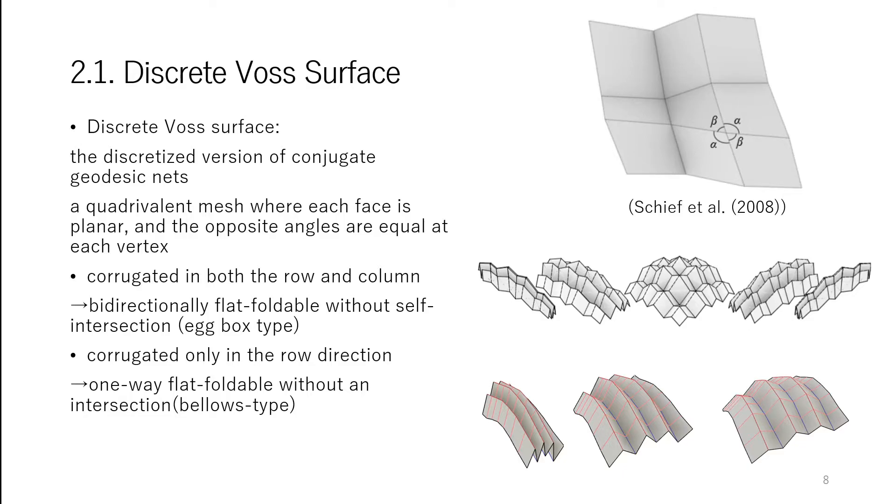When the surface is corrugated in both the row and column directions, we obtain the generalization of egg-box surfaces, often bidirectionally flat foldable without self-intersection.